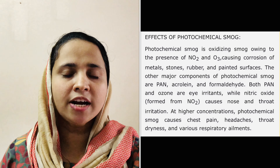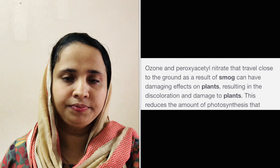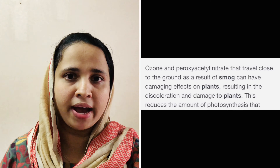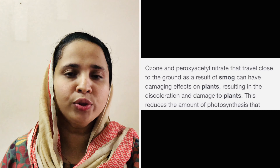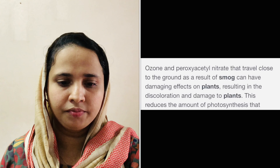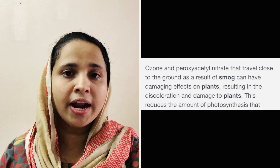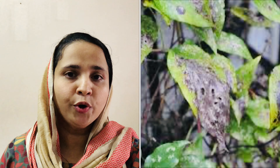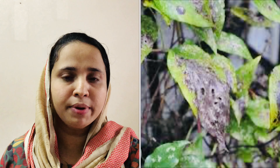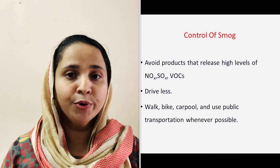Photochemical smog is also toxic to plants. Higher concentration of NO2 damages the leaves of the plants and retards the growth of a plant by decreasing the rate of photosynthesis. Photochemical smog also leads to cracking of rubber, discoloration of painted surfaces, corrosion of metals, and degeneration of stones and building materials.